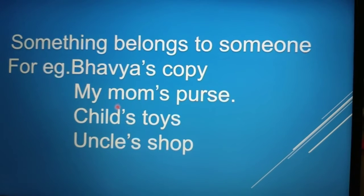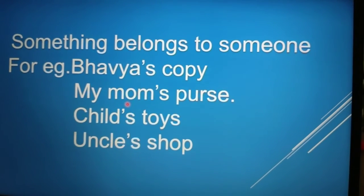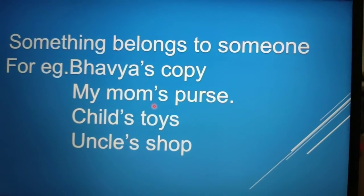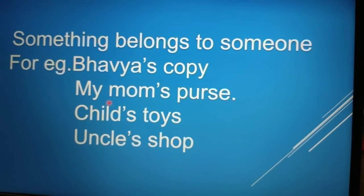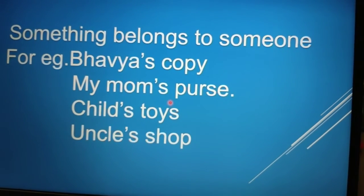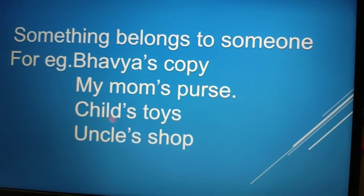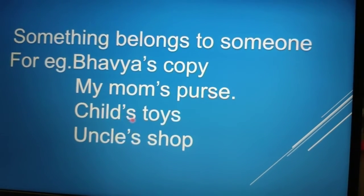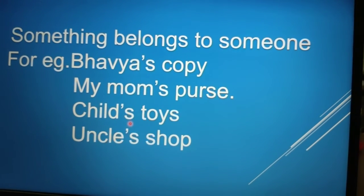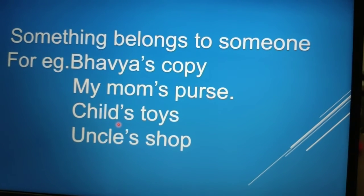One more example: my mom's purse. If you have been asked whose purse this is, you can say my mom's purse. This apostrophe shows it means this is the purse of someone's mom. Next example: child's toys — child's toys means bachche ke. In Hindi we say ka, ke, ki. This comma shows possessive.